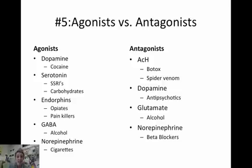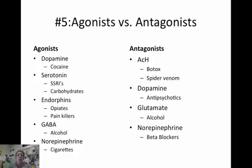Agonist versus antagonist — this could apply to drugs, food, or many things. Cocaine is a dopamine agonist — more dopamine. SSRIs are serotonin agonists because they block the reuptake, keeping serotonin in the synapse — blocking reuptake is not an antagonist. Carbohydrates are an agonist for serotonin. Painkillers and opiates increase endorphins. Alcohol increases GABA, causing slower processing and slower reaction time because of more inhibitory messages.